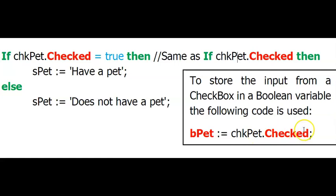So if the person selected it, a true would be stored in bPet. And if they did not select it, a false would be stored in bPet.